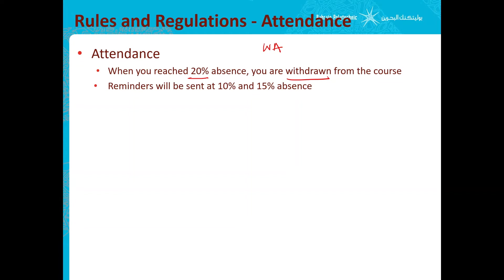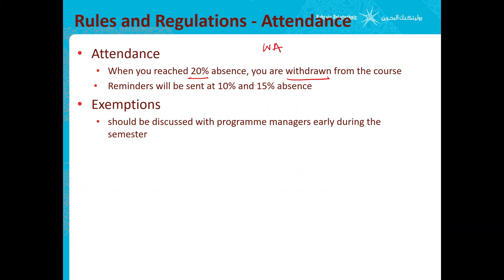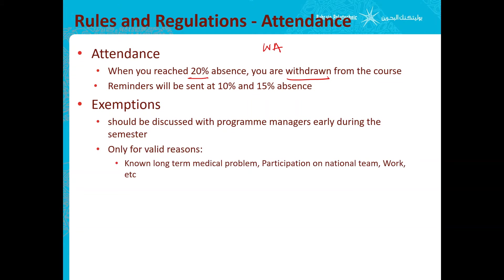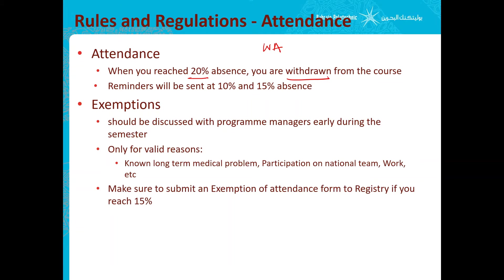Reminders will be sent at 10% and 15% of absence, but it is your responsibility to keep track of your attendance. For exemptions, if you have responsibilities or issues that will affect your attendance, you need to speak with your program managers or the course coordinator. Valid reasons include medical problems, participating on a national team, or work commitments. Make sure to submit an exemption of attendance form to registry if you reach 15%.